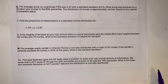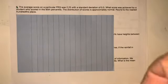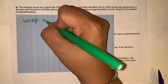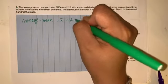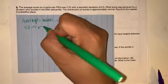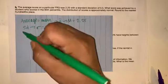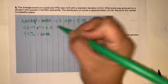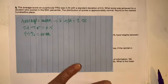Okay, so here's number six. The average score of a particular assessment is 2.25, so the average is equal to the mean, which is x-bar or mu. The standard deviation equals 0.5. What score was achieved by a student who scored in the 95th percentile? The distribution of scores is approximately normal — round to the nearest hundredths place. When it gives you the 95th percentile, it's basically saying that's the area.